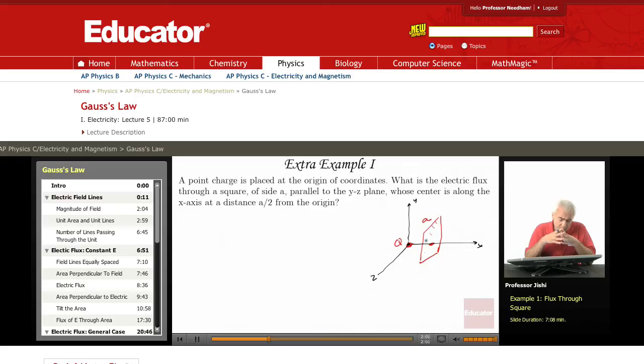Now, it is possible, in fact, to do it by brute force. That is, write E, you can say E is Q over 4 pi epsilon 0, R squared, times R hat.